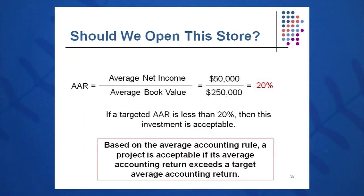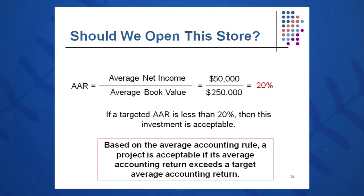Should we open this store? AAR is average net income divided by average book value: $50,000 divided by $250,000, or 20%. You still need a target from the CFO. If the target is less than 20%, then you accept the project. If the target AAR from the CFO is higher than 20%, then this project will get scrapped.